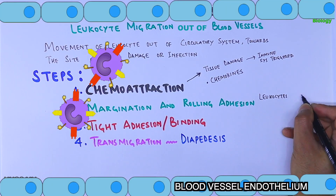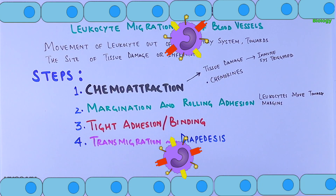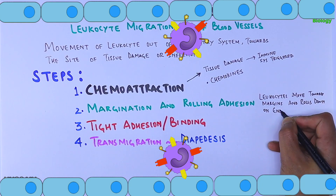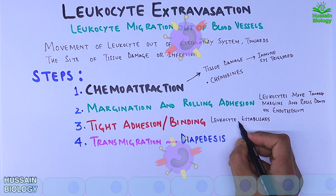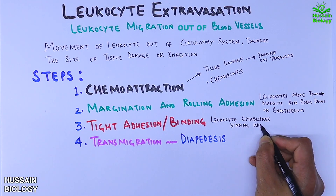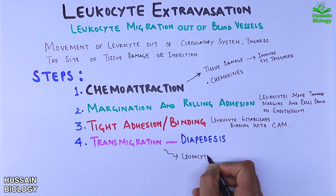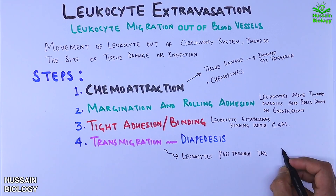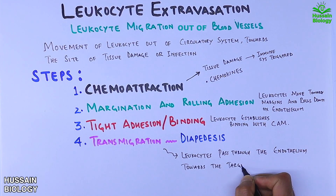In margination and rolling adhesion, leukocytes move towards the margins of the blood vessel and roll along the endothelium. In the tight adhesion step, leukocytes establish binding with cell adhesion molecules of the endothelium. And in the last step, transmigration, these leukocytes pass through the endothelial membrane of the blood vessel towards the target site.